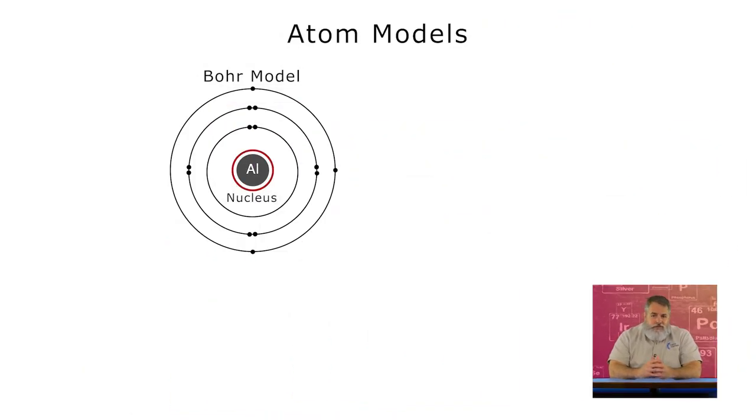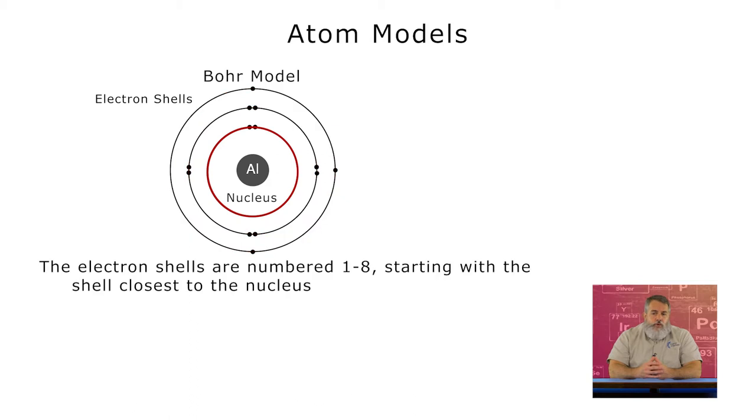The Bohr model has the nucleus in the center, and the electron shells are drawn in concentric circles outside of the nucleus. The circle closest to the nucleus is the first electron shell. The next circle out from the nucleus is the second shell. The next circle out from that one is the third electron shell, etc.